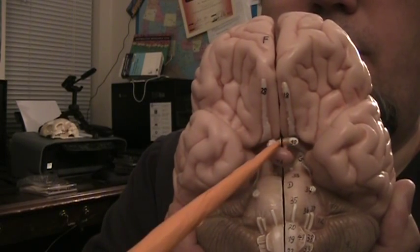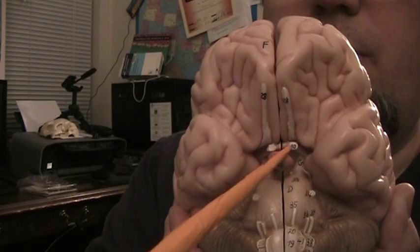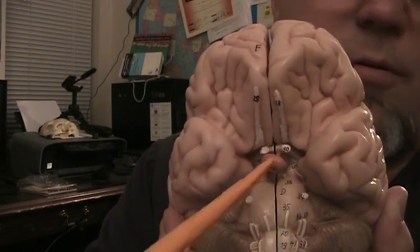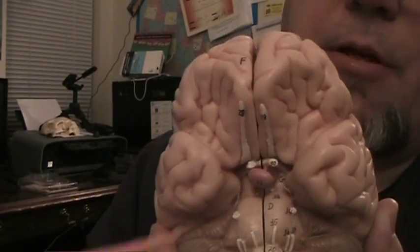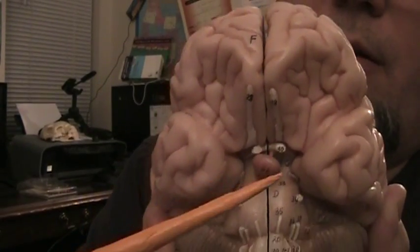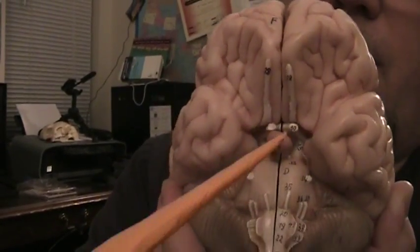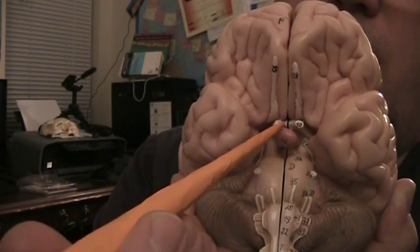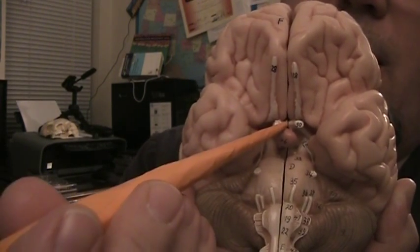Optic nerve, this is CN2, cranial nerve 2. Optic nerve carries vision and this is the only nerve that crosses the midline. There's that optic chiasm.